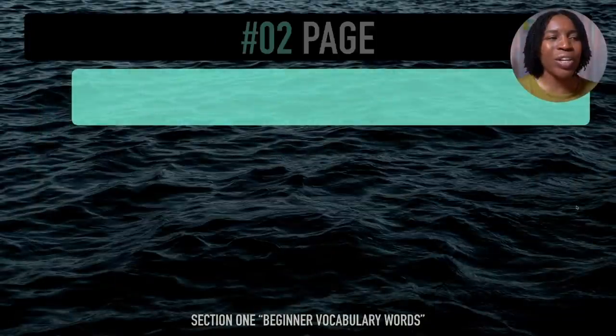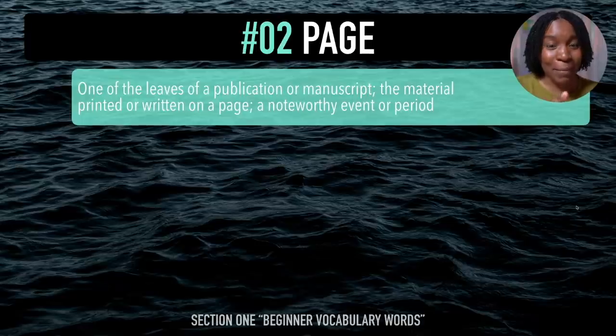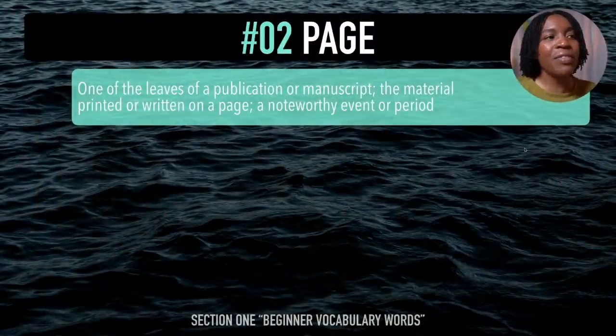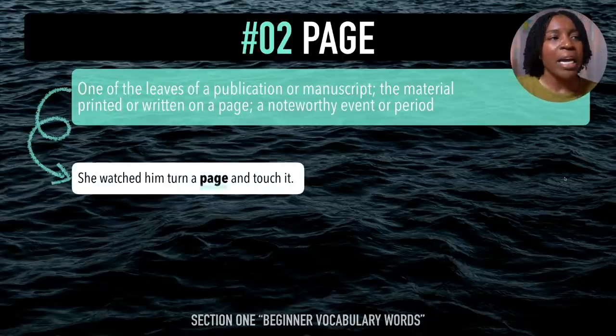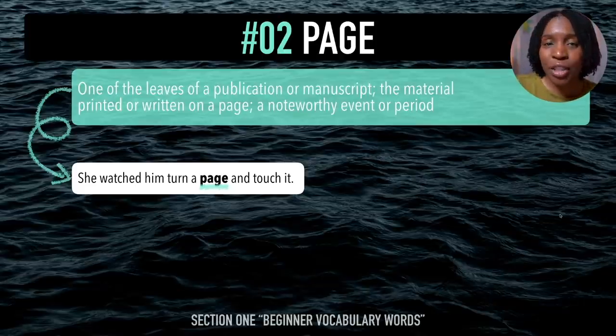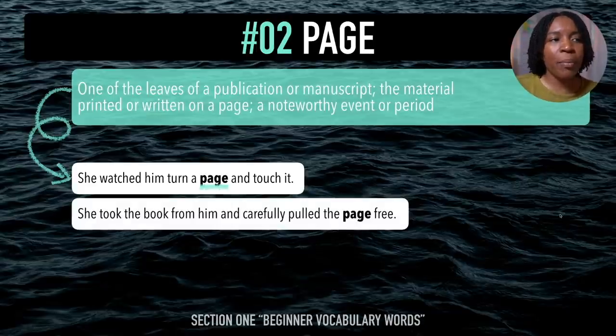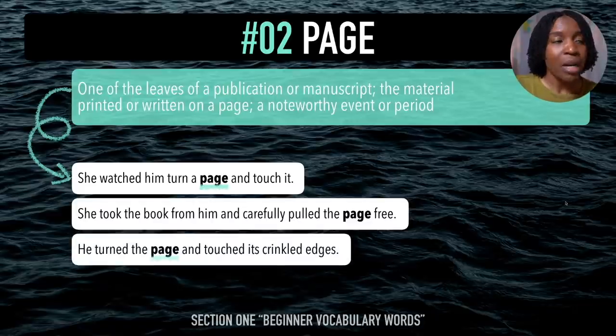The next beginner vocabulary word is 'page'. You hear that 'juh' sound, right? After me — page. Excellent. This word means one of the leaves of a publication or manuscript, the material printed or written on a page, or a noteworthy event or period. Example sentences: She watched him turn a page and touch it. She took the book from him and carefully pulled the page free. He turned the page and touched its crinkled edges. Last time — page.